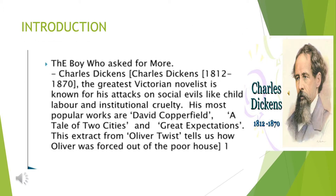Let us know about the author. Charles Dickens' period was from 1812 to 1870. He was the greatest Victorian novelist and is known for his attacks on social evils like child labour and institutional cruelty. Most of his writings were based on social evils and existing problems in society. His most popular works are David Copperfield, A Tale of Two Cities, and Great Expectations.